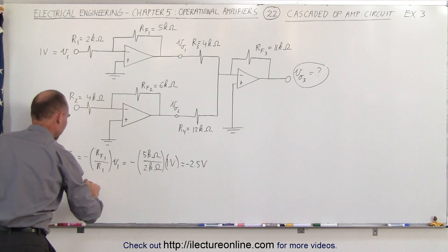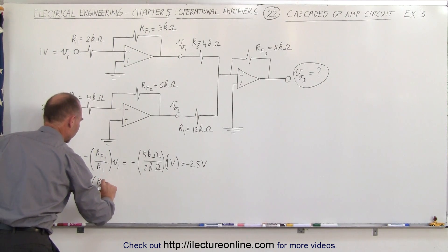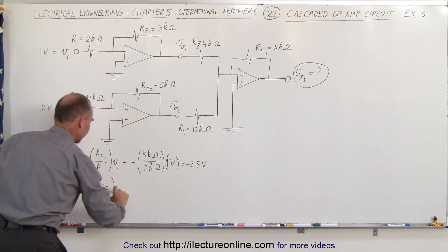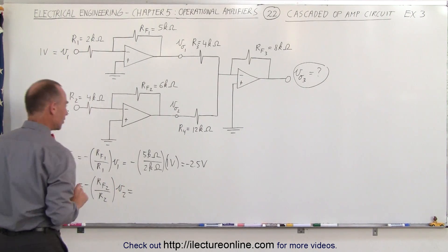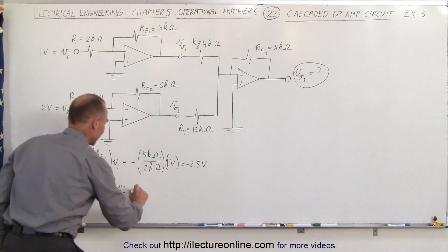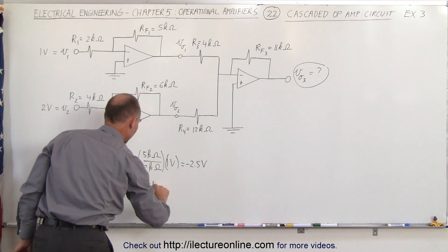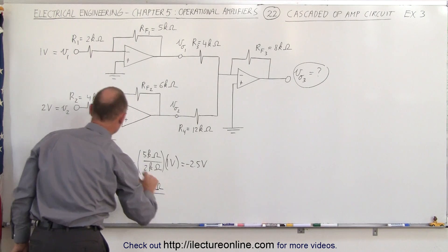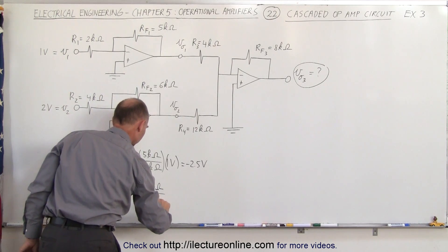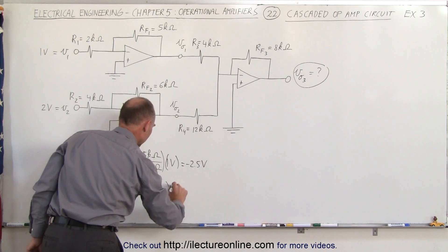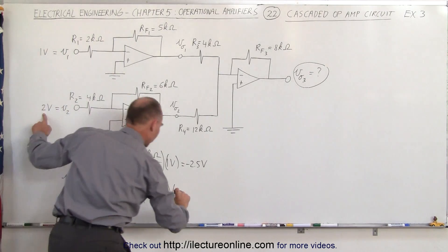The output of the second circuit, the second op amp, is equal to the negative of RF2 divided by R2 times the input voltage V2. So that will be the negative of the ratio of 6 kilo ohms, the feedback resistor, divided by R2 which is a 4 kilo ohm resistor, and the input voltage in this case is 2 volts.